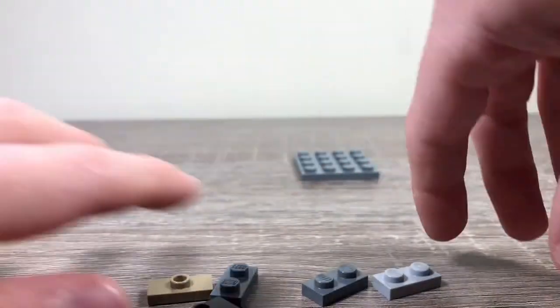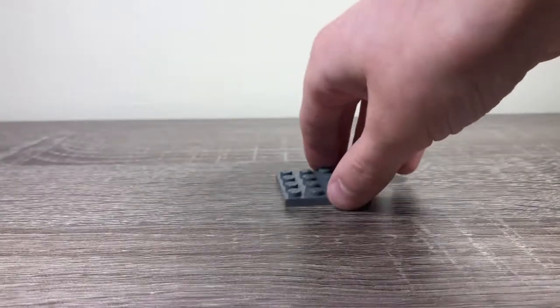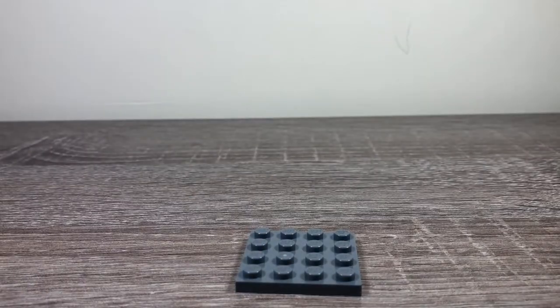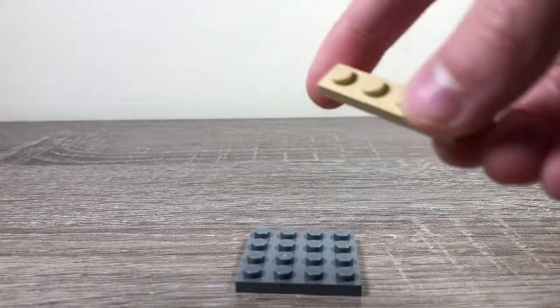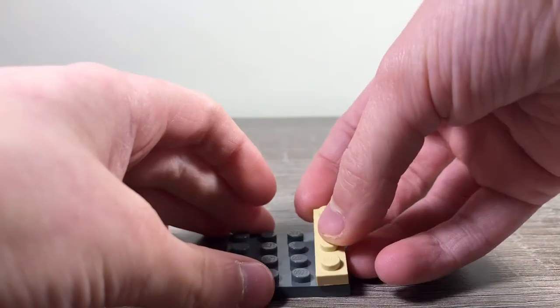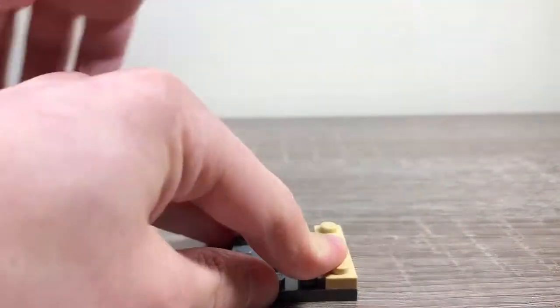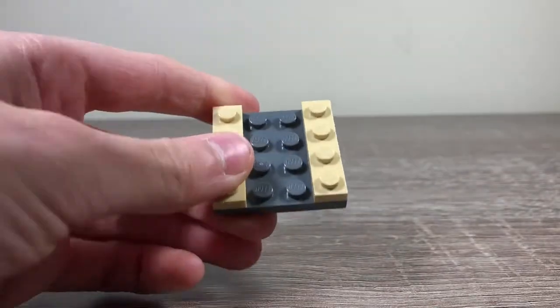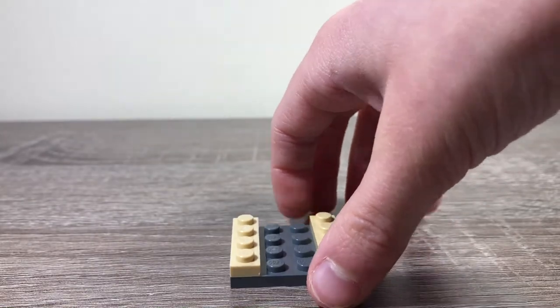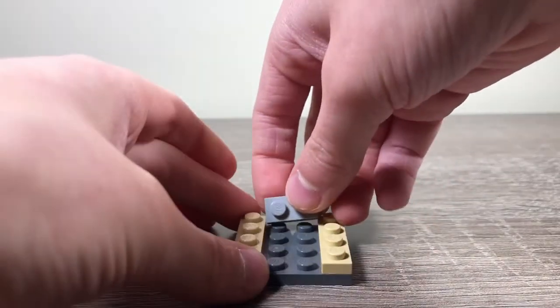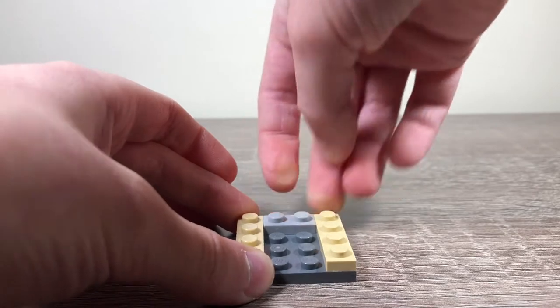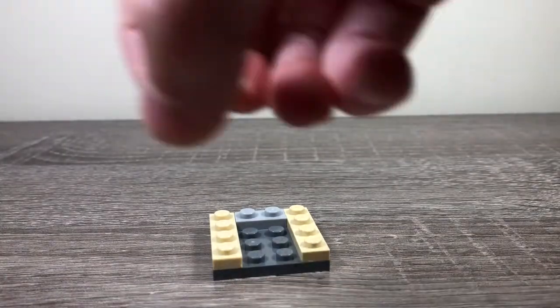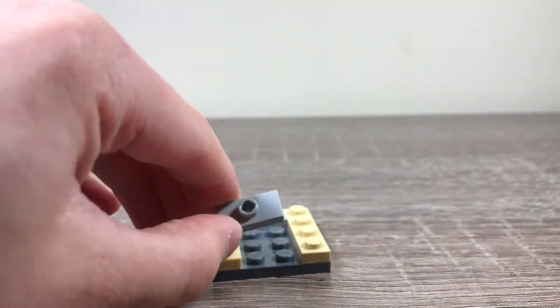To start this, you want to get all these pieces away except for the four by four plate. Then take some one by fours and stick them on each side like that. Then take a one by two, put it in between, and then take a jumper plate if you can in the same color.